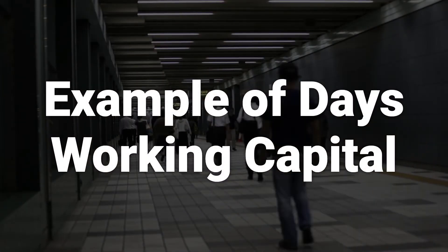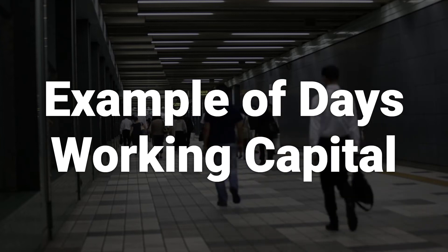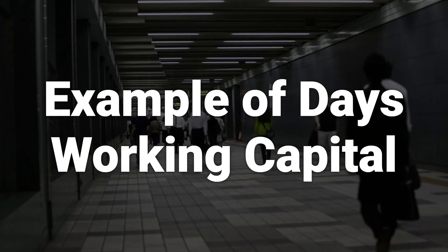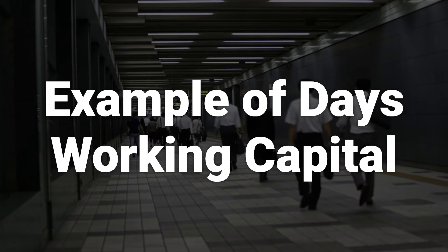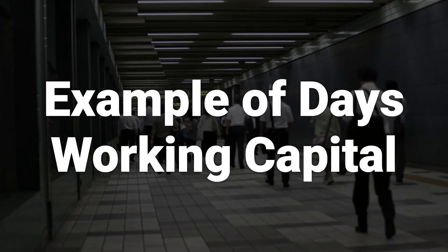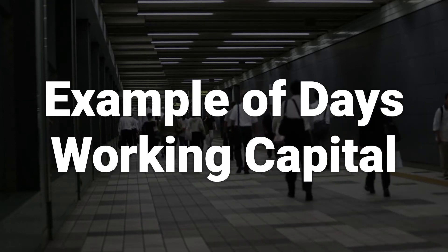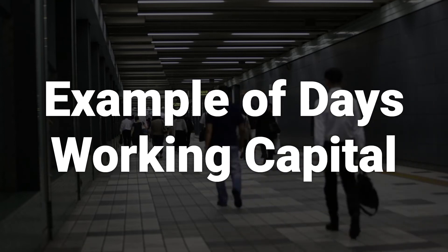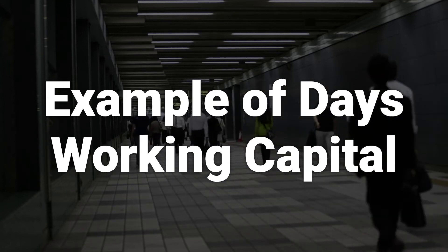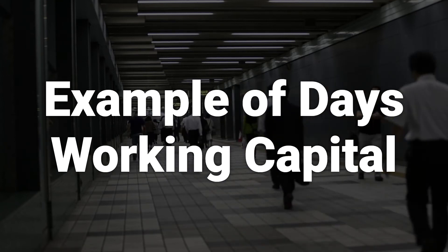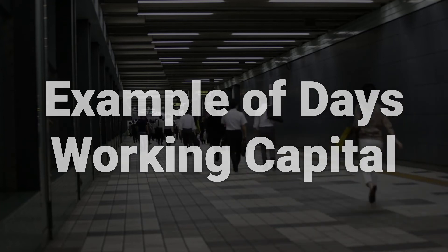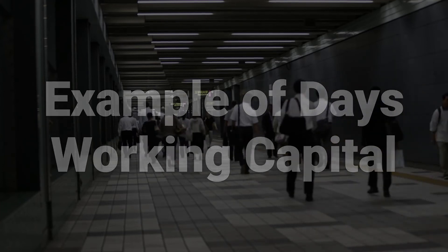For example, if a company makes $10 million in sales with current assets of $500,000 and current liabilities of $300,000, its days working capital would be 6.08 days. An increased level of sales, all other things equal, produces a lower number of days working capital because the company is converting working capital to more sales at a faster rate.